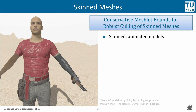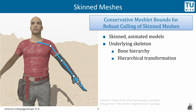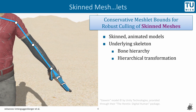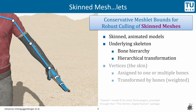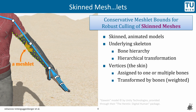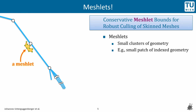Our solution targets skinned animated models with an underlying skeleton, which is a bone hierarchy and therefore applies bone transformations in a hierarchical manner. The vertices of such animated models constitute the skin, like in the case of our virtual character here. Skinned vertices are assigned to one or multiple bones in a weighted manner and move according to the underlying bone hierarchy. For our target application, we are dividing the vertices into small clusters, which we call Meshlets.